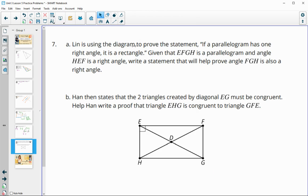In number seven, it says that Lynn is using the diagram below to prove the statement that if a parallelogram has one right angle, then it's a rectangle. So given that EFGH is a parallelogram and angle HEF that's pictured here as a right angle, write a statement that would help us to prove that FGH is also a right angle. So how could we prove that this is a right angle?